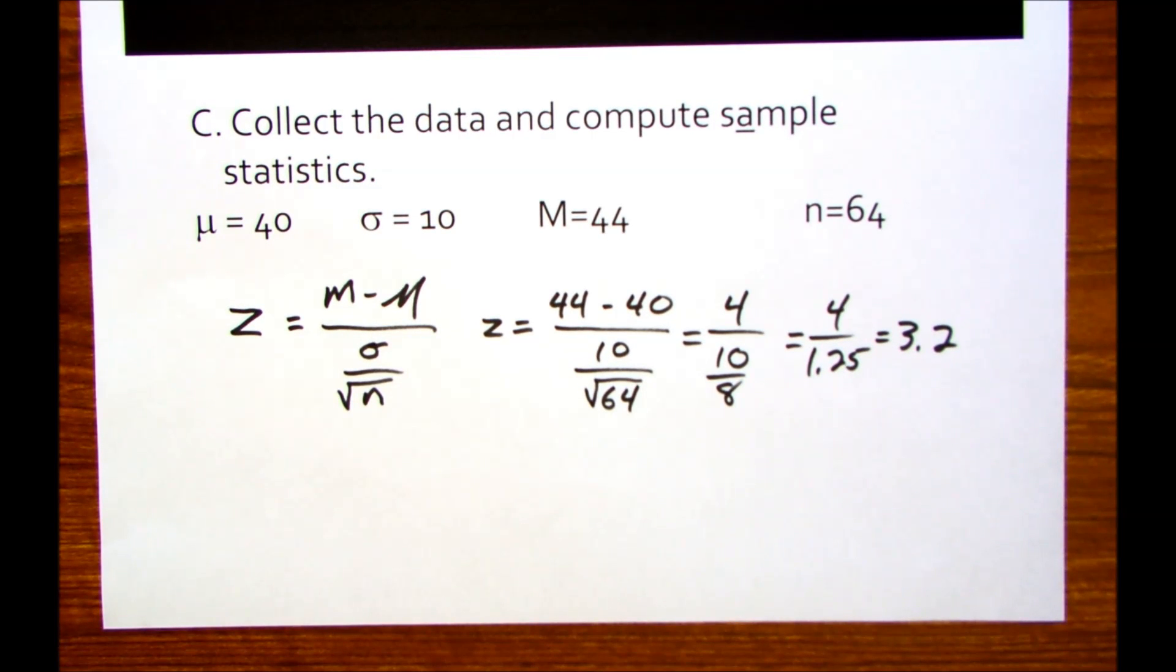So 1.96 here and negative 1.96 here. So again, that tells us that if the reading, the phonics instruction works and students do better on the reading test, that would be over on this end of the distribution. If it does worse, then it would be down here on this end of the distribution.